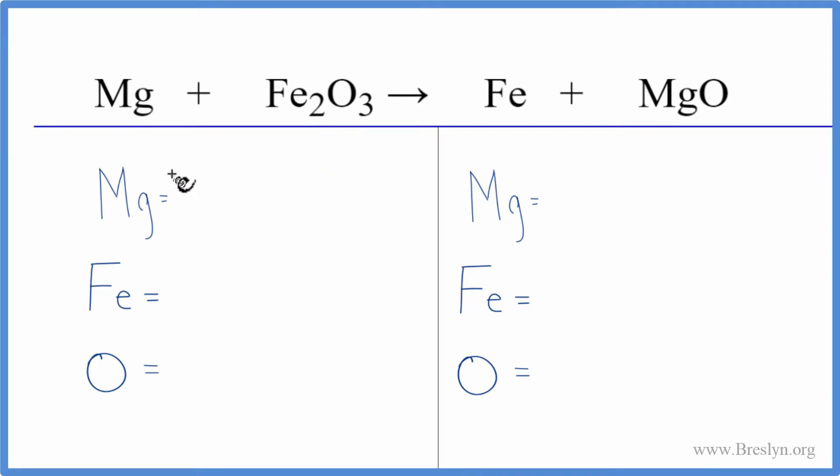This is a single displacement reaction. So we have Mg, one of those, two iron, and three oxygens. On the product side, we have one magnesium, then we have one iron and one oxygen.